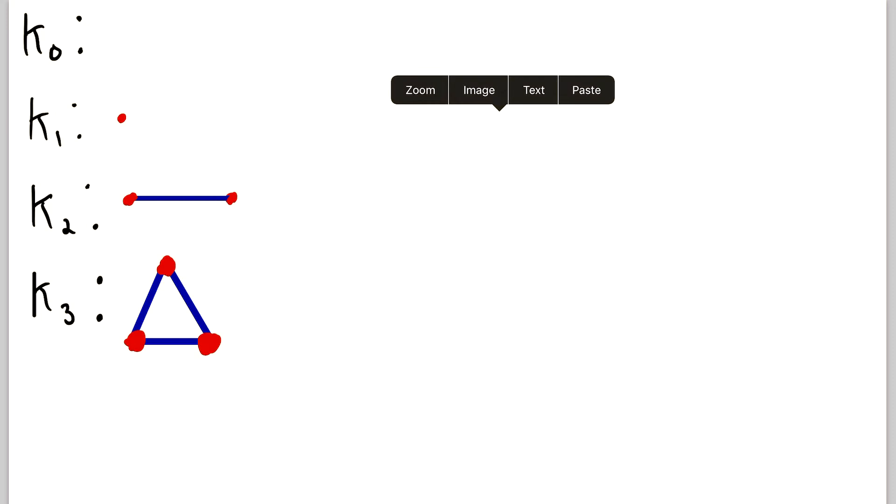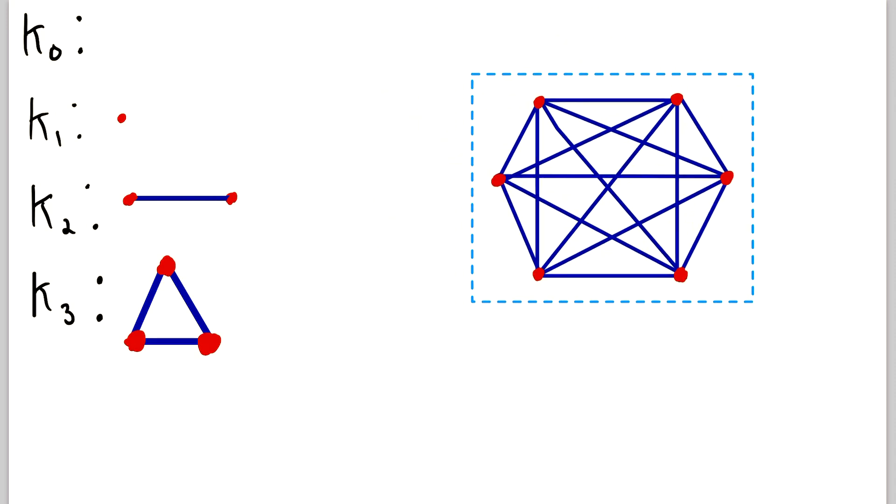Now, I'll show you a slightly larger example. Which complete graph is this? Well, we see there are six vertices, so this is K6, the complete graph on six vertices. It is complete because every pair of distinct vertices is joined by an edge. You can look at some of them, those two vertices are joined by an edge. Look at these two vertices, they're joined by this edge here. Every pair of distinct vertices is joined by an edge. Thus, it's the complete graph on six vertices.